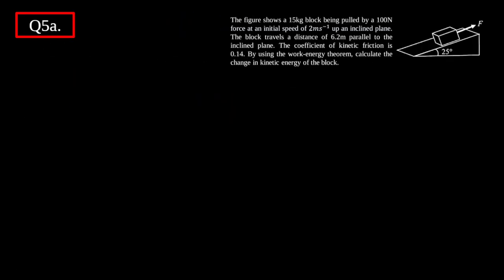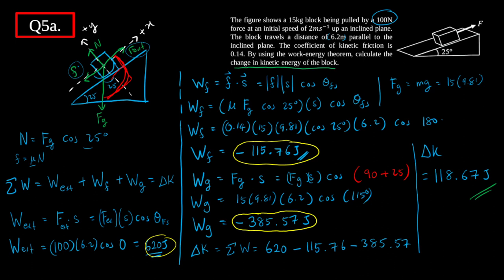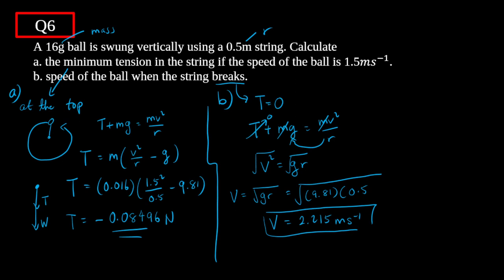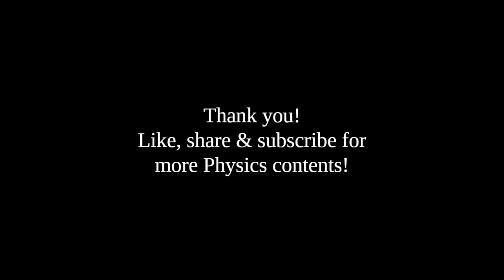To summarize: we covered work done by multiple constant forces and applied the work-energy theorem to find the change in kinetic energy; we calculated instantaneous power for a uniformly accelerating motorcycle; and we analyzed vertical circular motion, finding minimum tension at the top and the critical speed when the string breaks. Thank you — don't forget to like, share, and subscribe.